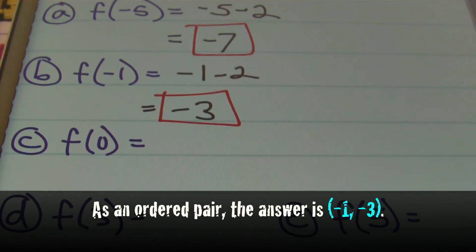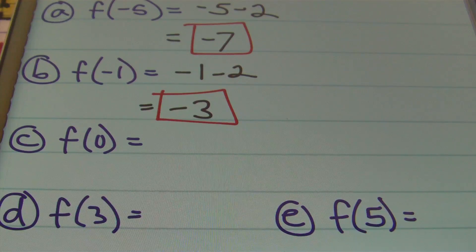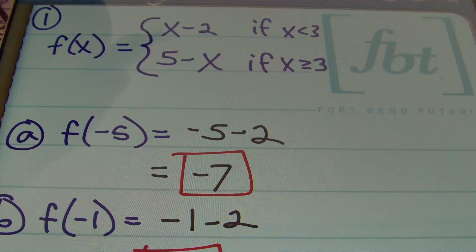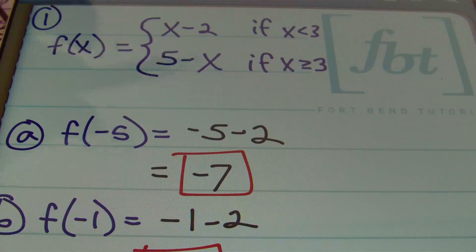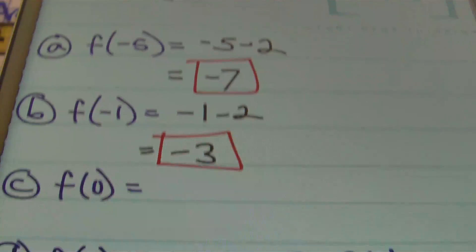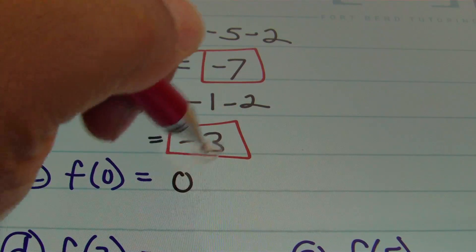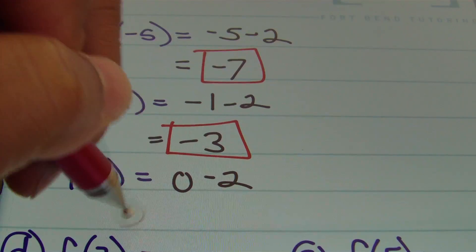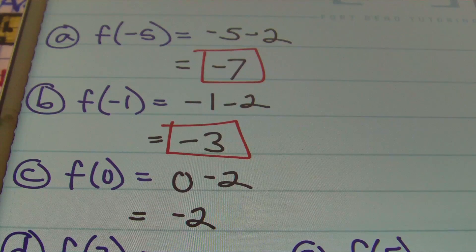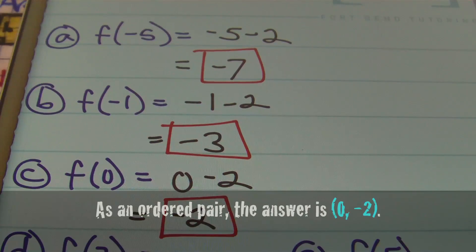Now part c: our x value is zero. Zero is less than three, so we use x minus two. Replacing x with zero gives zero minus two, which simplifies to negative two.